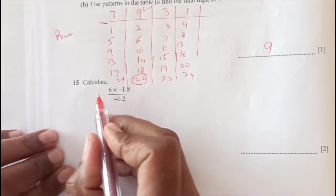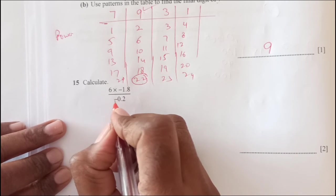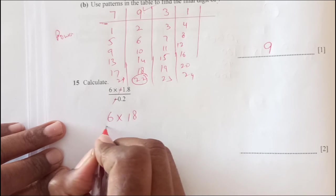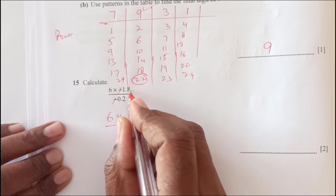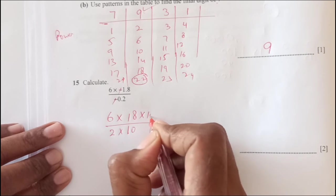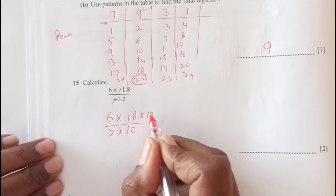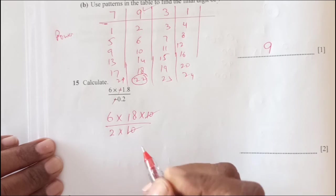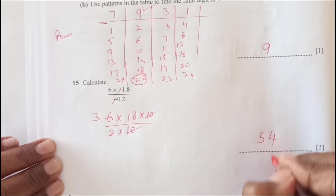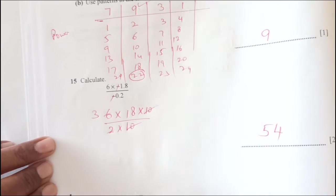Calculate 6 times negative 1.8 times negative 2. If this is negative this is negative it will cancel. 6 times 18 over 10 to remove the decimal and 2 is already there, to remove this decimal we will put 10 up there. 10 and 10 get cancelled, 2 times 3, 18 times 3 is 54. So 54 is the final answer.